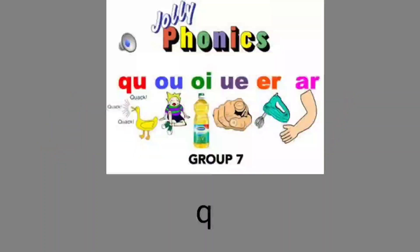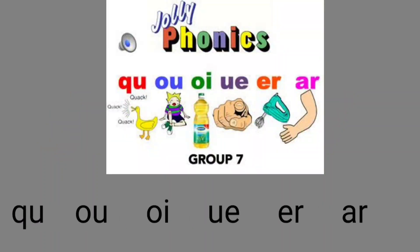In group seven, Q is not taught as a single sound — it combines with the letter U to form the sound 'kw'. Group seven consists of the sounds Q, OW, OI, and UR.